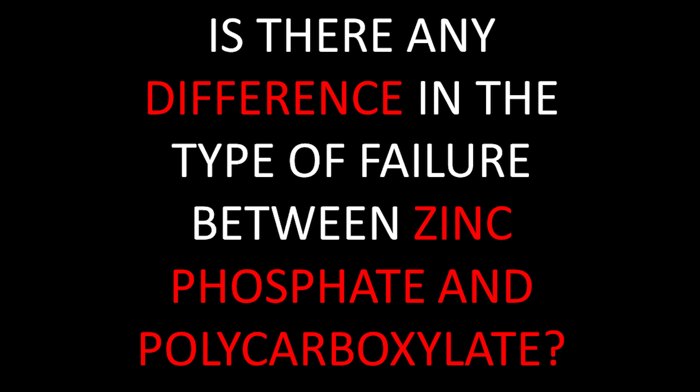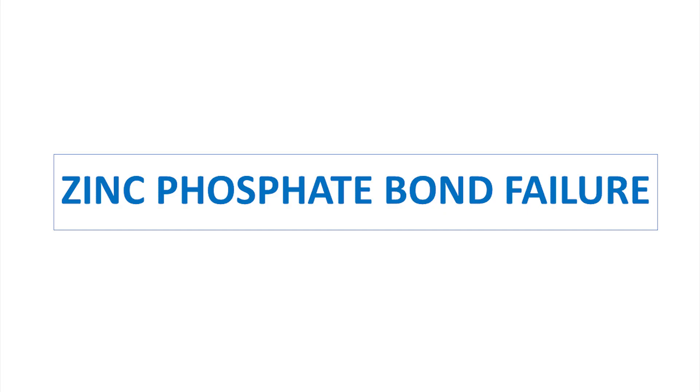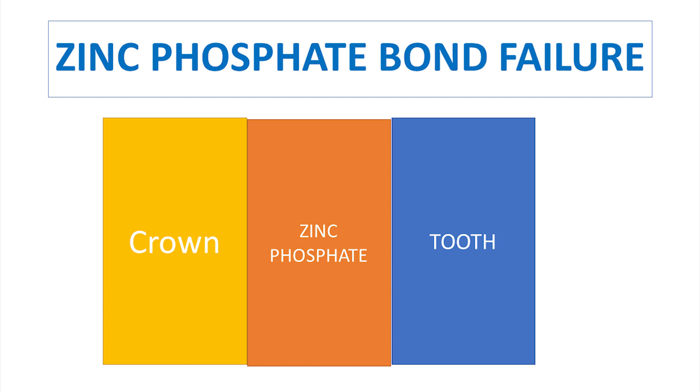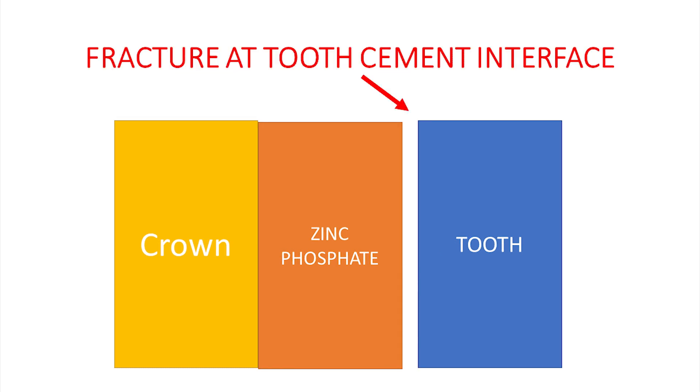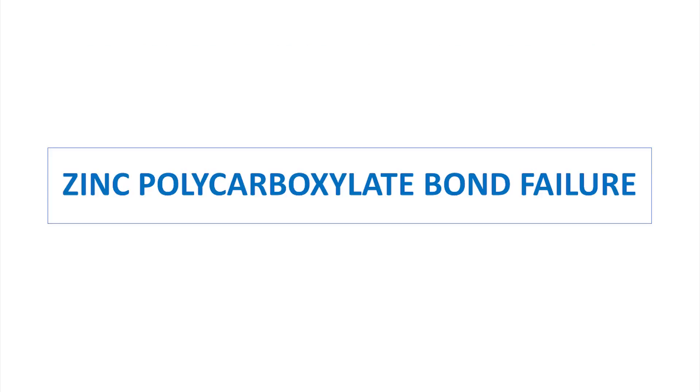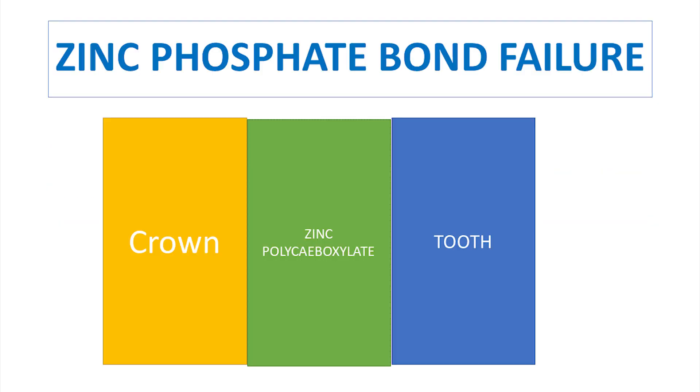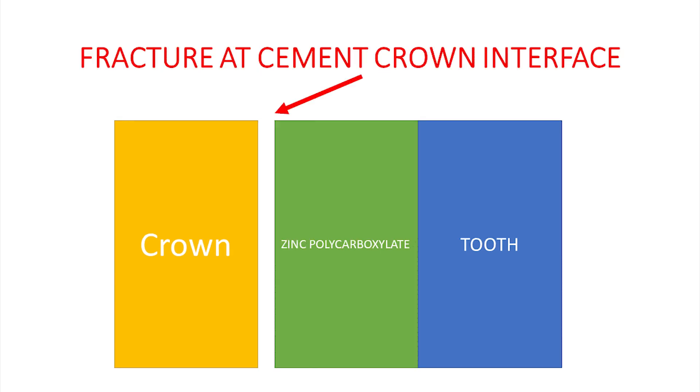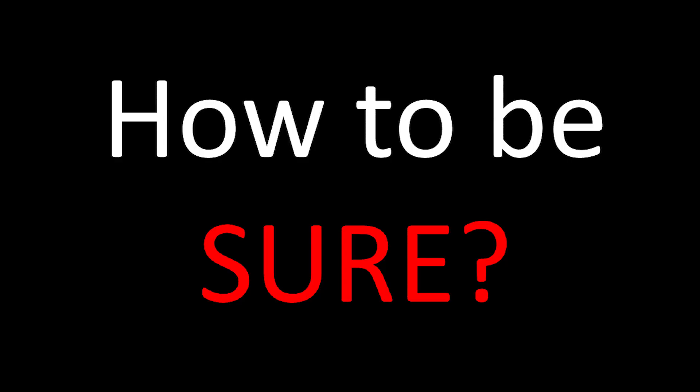The effect of the type of bonding is also seen in the way the cement will fail. If you see the bond failure of zinc phosphate cement, the failure generally occurs between the cement and the tooth interface because it's a mechanical bond. Whereas in zinc polycarboxylate, you will see the failure in the cement and crown interface rather than cement and tooth interface, because there you have the chemical bond.